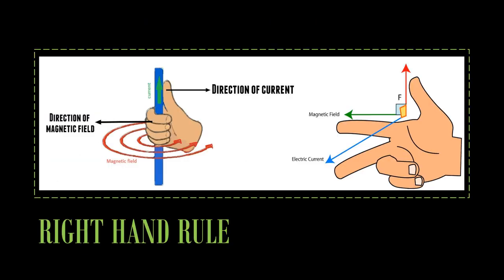In mathematics and physics, the right-hand rule is a common mnemonic for understanding orientation of axes in three-dimensional space. To use the right-hand rule, begin by making an L-shape using your right thumb, pointer, and middle finger. Then move your middle finger inwards towards your palm so that it is perpendicular to your pointer finger and thumb. To determine the direction of the magnetic force on a positive moving charge, point your right thumb in the direction of the velocity, your index finger in the direction of the magnetic field, and your middle finger will point in the direction of the resulting magnetic force.